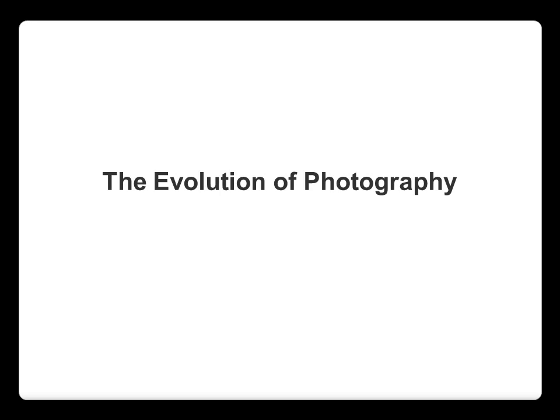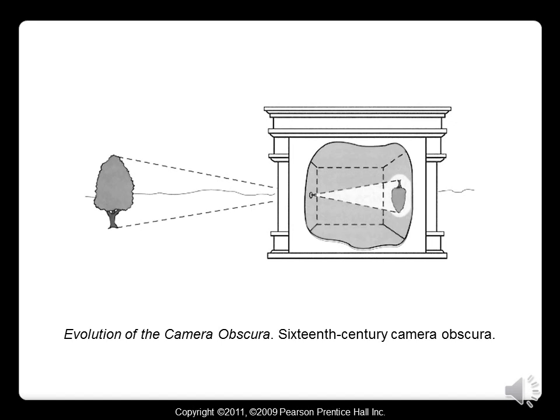We will now be discussing the evolution of photography from its earliest primitive forms to modern contemporary approaches. The next few slides will discuss the evolution of the Camera Obscura. This image here is of a 16th century Camera Obscura, which is translated literally as a dark room. It is the forerunner to modern photography.